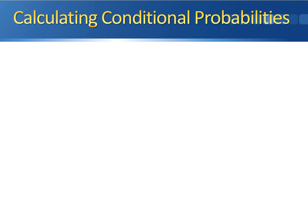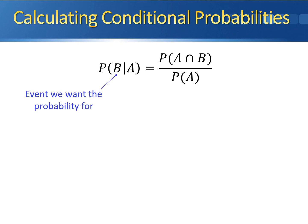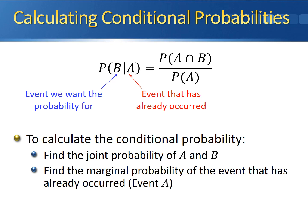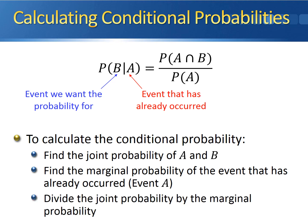Calculating a conditional probability is a bit more difficult than calculating a joint or marginal probability. P(B|A), where B is the event we want the probability for and A is the event that has already occurred, is equal to the joint probability of A and B divided by the marginal probability of A — the marginal probability of the event that has already occurred. So: find the joint probability of A and B, find the marginal probability of A, divide the joint by the marginal, and you get the conditional probability of B given A.